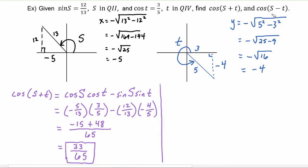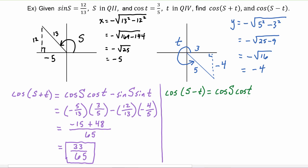Next we have to do the cosine of s minus t. Let's write out the identity: it would be cosine of s, the first angle, times cosine of t, the second angle, plus sine of the first angle s times sine of the second angle t.